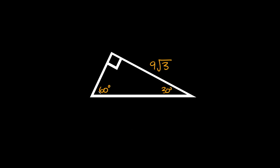Here is our next 30-60-90 problem. This time we're given the long leg, which is 9√3. The hypotenuse is the side opposite the right angle, and the short leg is over here. We know the long leg equals the short leg times root 3, so 9√3 = s times √3, which means s must equal 9. So the short leg is 9, and the hypotenuse is twice the short leg — so 18.